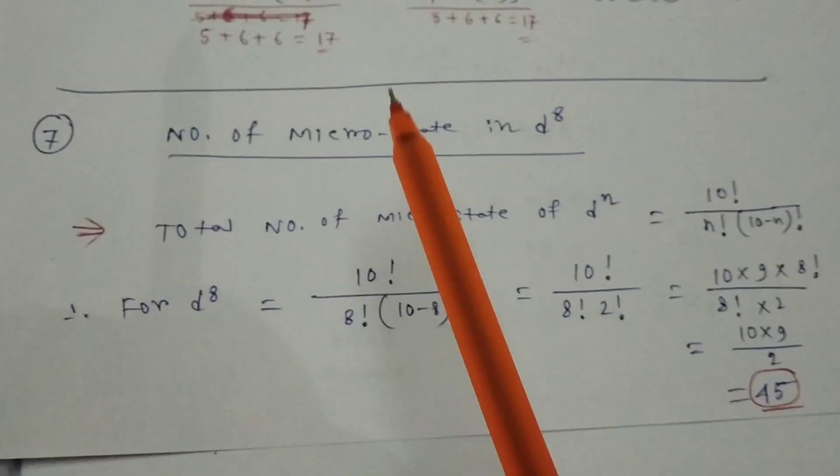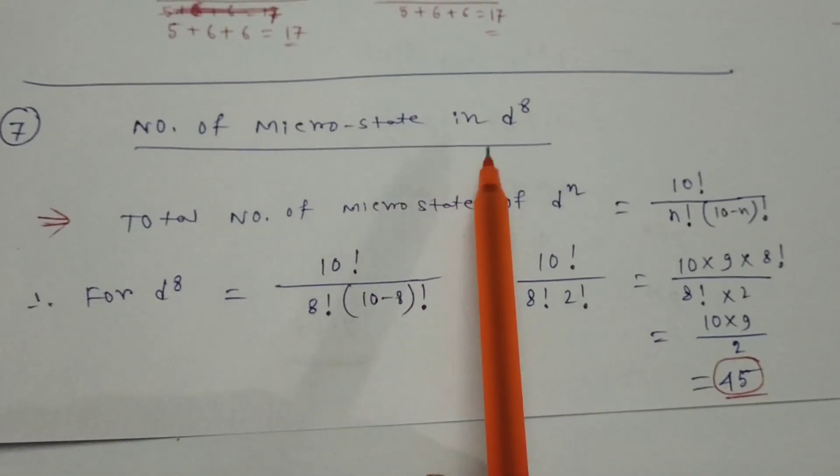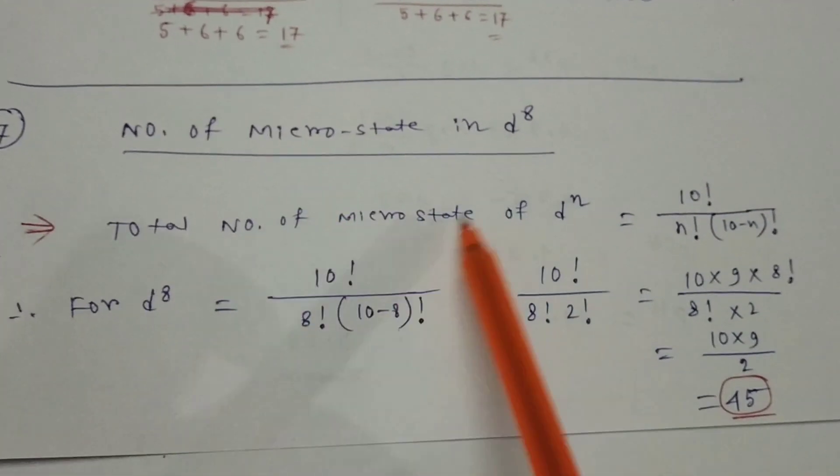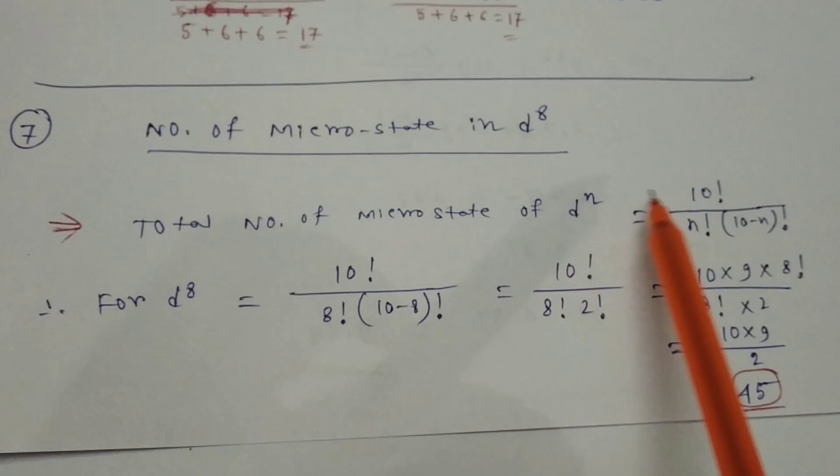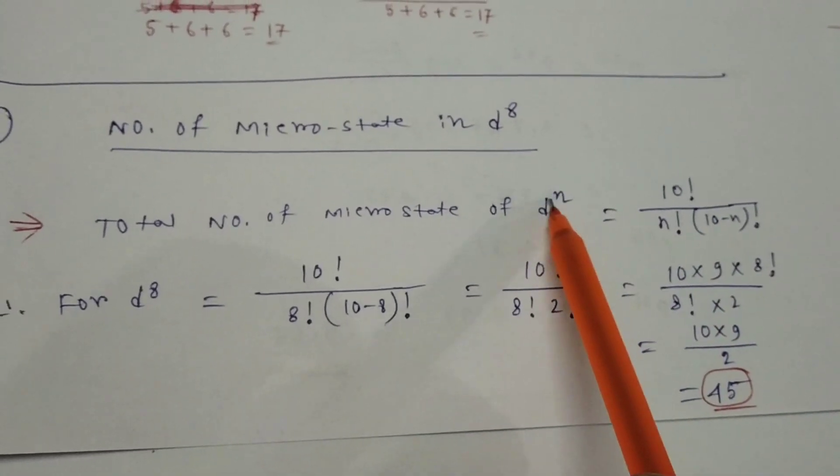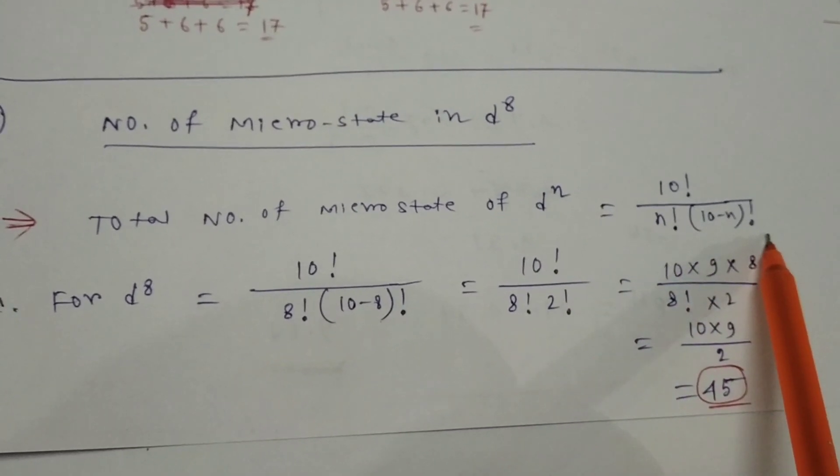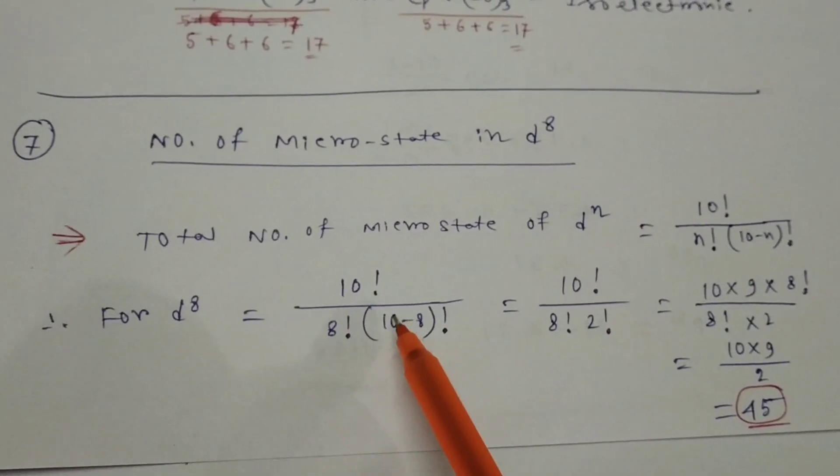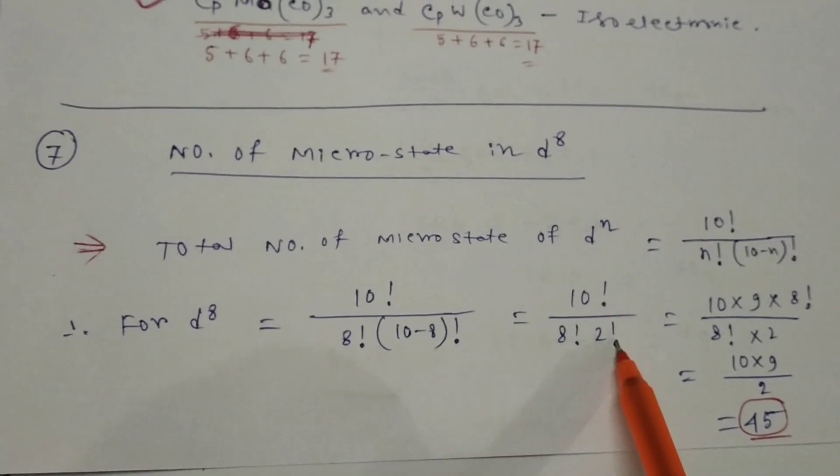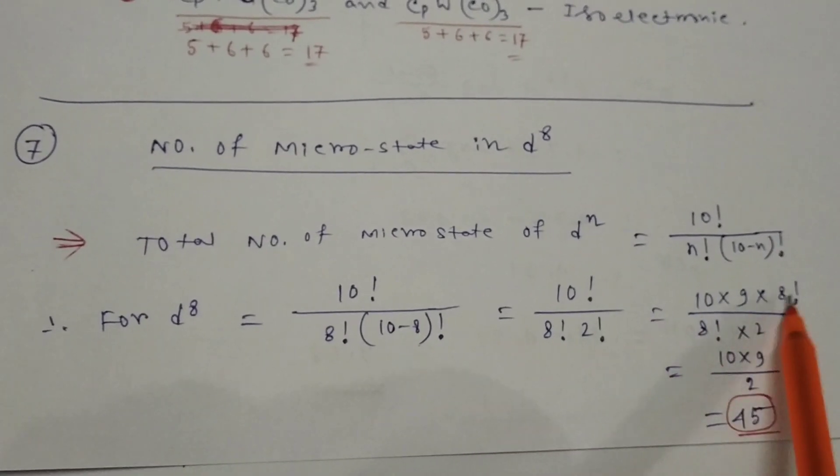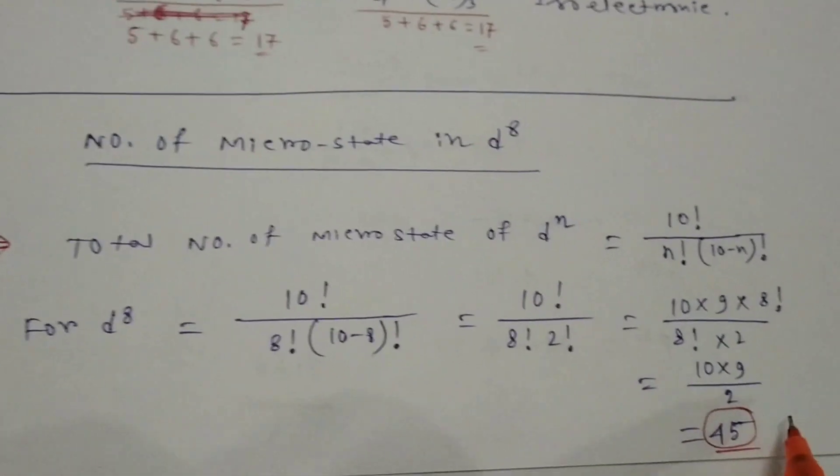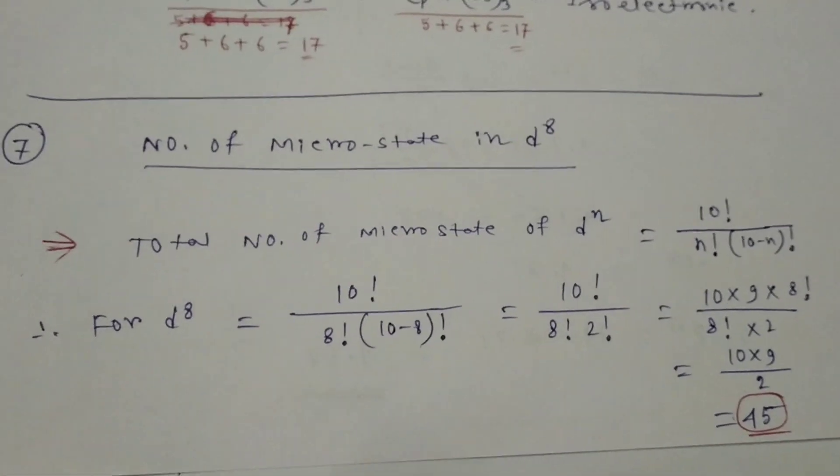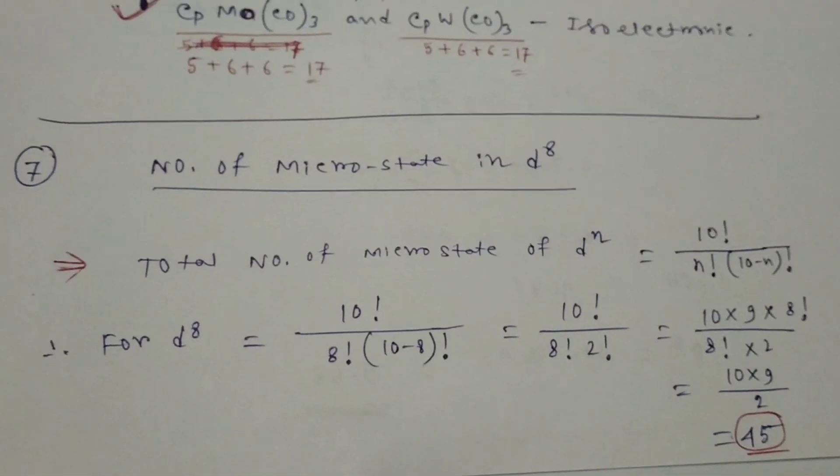The seventh question: number of microstates in d8. For any D system, the general formula of microstate of Dn equals factorial 10 divided by factorial n times 10 minus n factorial. For d8, that is 10 factorial divided by 8 factorial times 2 factorial. 10 times 9 times 8 factorial divided by 8 factorial times 2, equals 45. Total number of microstates for d8 is 45. It's the same as d2, which also has 45 microstates.